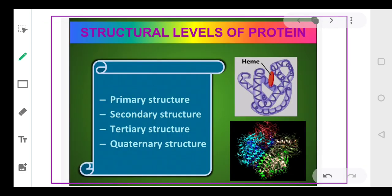Coming to the structural levels of proteins — proteins can form different types of structures and are named accordingly. If they have a primary structure, we call them primary proteins. If secondary, secondary proteins. If tertiary, tertiary proteins. And if they have a quaternary structure, we call them quaternary proteins.